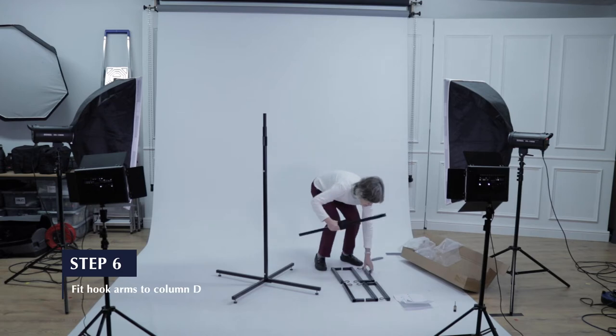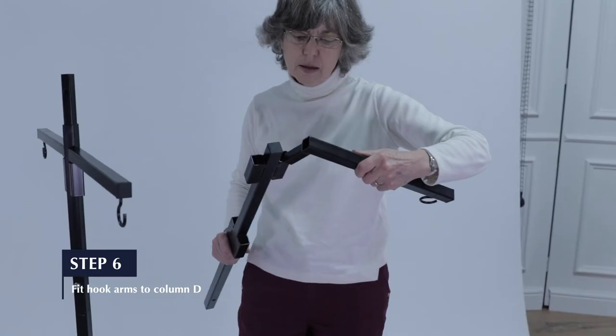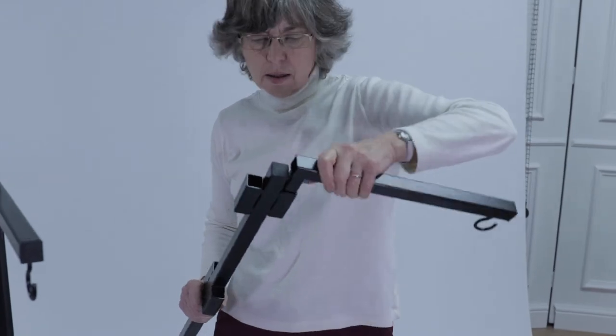Step 6. Fit two of the hook arms E into the top two sockets on column D.